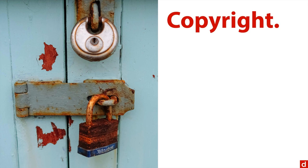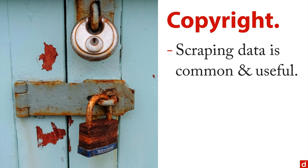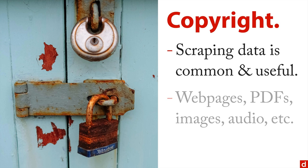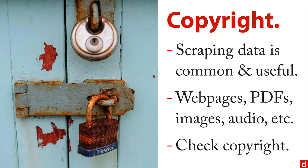Next is copyright, where people try to lock down information. Just because something is on the web doesn't mean you're allowed to use it. Scraping data from websites is a common and useful way of getting data — from web pages, PDFs, images, audio, and many other sources. But the assumption that because it's on the web it's okay to use is not true. You always need to check copyright and make sure it's acceptable to access that particular data.